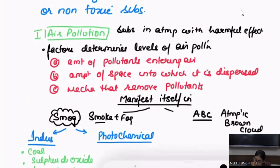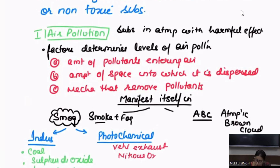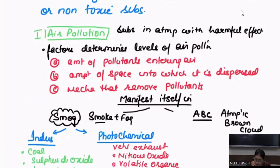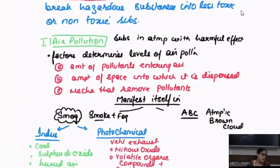When you talk about photochemical smog, it is basically coming from vehicular exhaust, and that is why we take it up with nitrous oxide. Nitrous oxide combines with a range of volatile organic compounds and sunlight to create photochemical smog. So industrial and photochemical smog are not strictly associated with any particular season.